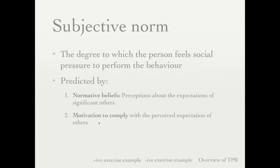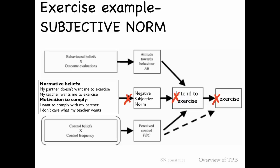Looking at a negative subjective norm example: someone might believe their partner or family doesn't want them to exercise, and they very much want to comply with what their partner or family wants. This leads to a negative subjective norm and they likely won't form the intention to exercise. Another example: teachers in a program might want students to exercise, but if a student doesn't care what their teacher wants, they'll have a negative subjective norm. You have to have both constructs positive to have a positive subjective norm.